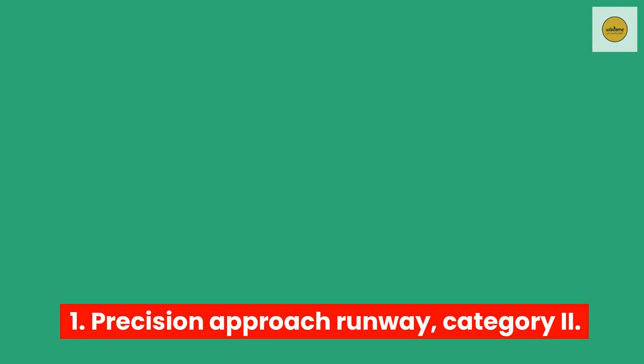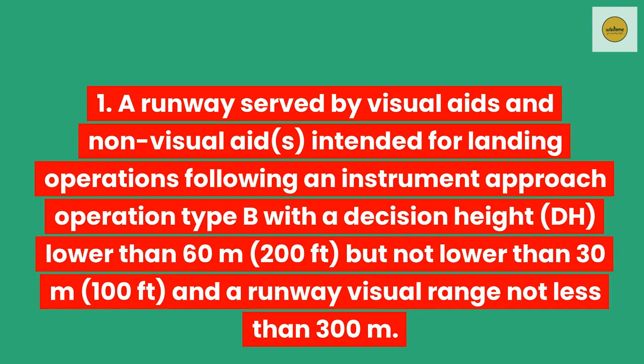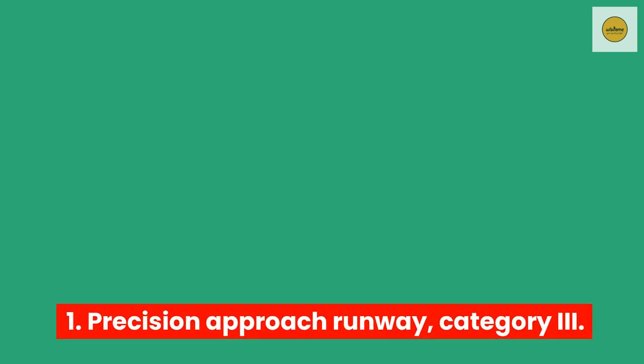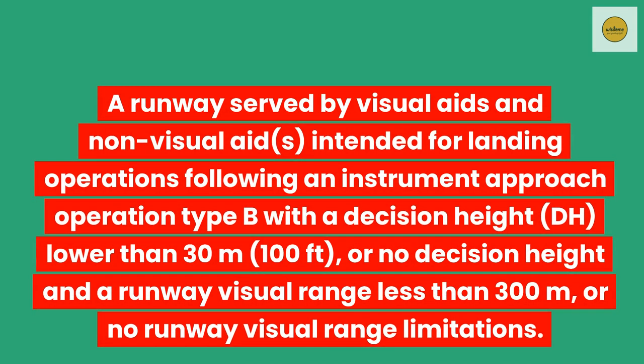Precision approach runway, Category II. A runway served by visual aids and non-visual aids intended for landing operations following an instrument approach operation type B with a decision height (DH) lower than 60 meters (200 feet) but not lower than 30 meters (100 feet). Precision approach runway, Category III. A runway served by visual aids and non-visual aids intended for landing operations following an instrument approach operation type B with a decision height lower than 30 meters, or no decision height, and a runway visual range less than 300 meters, or no runway visual range limitations.